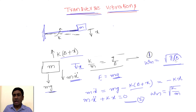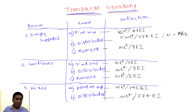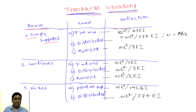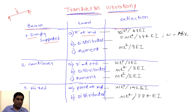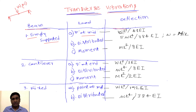Now here are the deflection formulas for different beams subjected to different types of loads, which we use to find δ. The first case is a simply supported beam. When a point load W (in Newtons) is applied at the midpoint, we use a specific formula derived in strength of materials. Note that W is in Newtons, not kilograms.